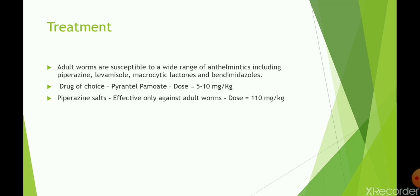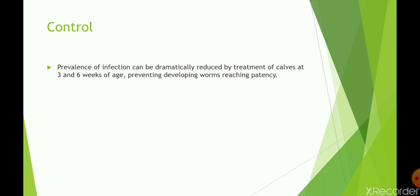For treatment: adult worms are susceptible to a wide range of anthelmintics including piperazine, levamisole, macrocyclic lactones, and benzimidazoles. The drug of choice is pyrantel pamoate at a dose of 5 to 10 mg per kg. Piperazine salts can also be used but are effective only against adult worms. Pyrantel pamoate dose is 5 to 10 mg per kg, whereas piperazine salts dose is 110 mg per kg.